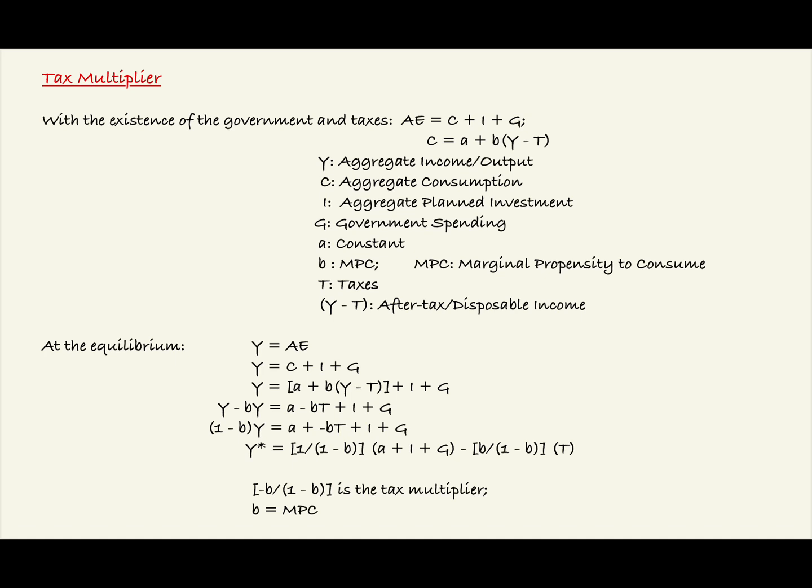After factoring out the Y in the left-hand side of the equation, we have the quantity of 1 minus B times Y equals A plus the negative value of BT plus I plus G.